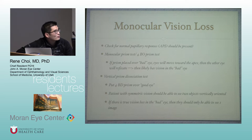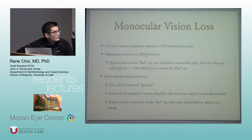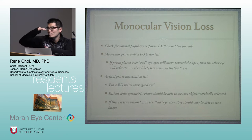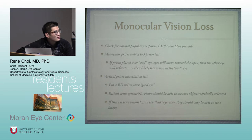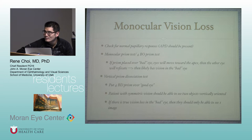The vertical prism dissociation test: place a four-base-down prism over the good eye. A patient with symmetric vision should see two objects superimposed — essentially inducing diplopia. However, if there is true vision loss in the bad eye, they should only be able to see one image.